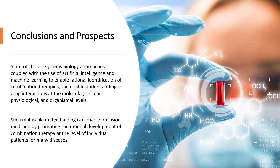In conclusion, the advantages of combining drugs are well recognized and activity in the area has increased dramatically thanks to the opportunities provided by the enhanced understanding of systems biology of disease. Methods to generate and analyze data have also evolved substantially over time thanks to improvements in screening technologies and computational capacities. However, identification of combination therapies remains challenging. In vitro methods which screen all possible combinations by experimental trials are time- and money-consuming, and usually only a small number of synergistic drug combinations can be identified. To bridge the gap between urgent need and low yield, state-of-the-art systems biology approaches coupled with the use of artificial intelligence and machine learning can enable rational identification of combination therapies and understanding of drug interactions at the molecular, cellular, physiological, and organismal levels. Such multi-scale understanding can enable precision medicine by promoting the rational development of combination therapy at the level of individual patients for many diseases.